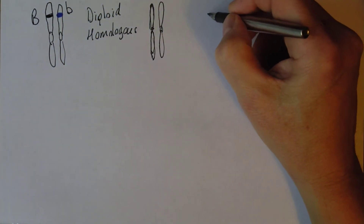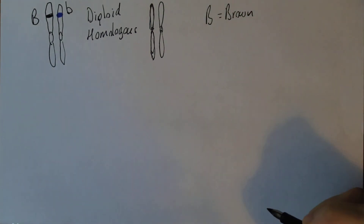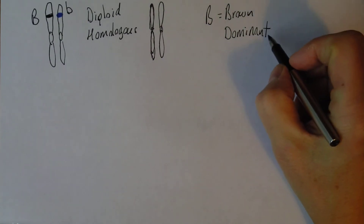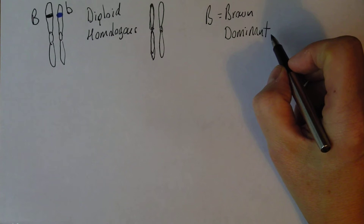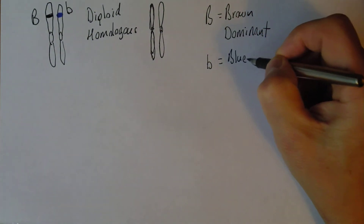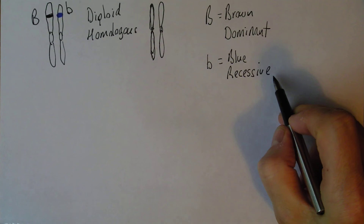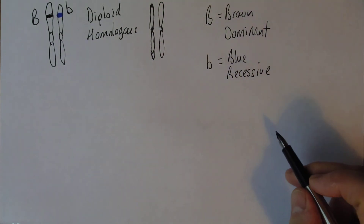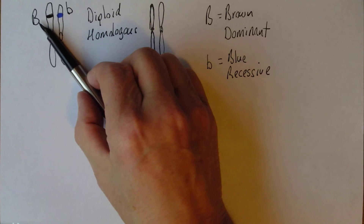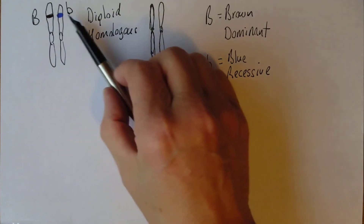I've put the B in capital letters because B for brown is the dominant gene. A dominant gene is one which will be expressed if it is present. Conversely, the small b for blue eyes is a recessive gene. A recessive gene is a gene which will only be expressed in the absence of a dominant gene. So what we see here in this parent is one gene for brown eyes which is dominant, and one gene for blue eyes which is recessive.